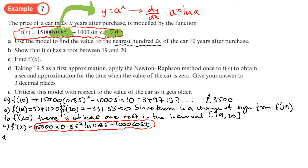Okay, part d. So part d is saying, taking 19.5 as a first approximation, apply the Newton-Raphson method once to obtain a second approximation. Right, so we know that x₀ is going to be 19.5. Newton-Raphson, which I'm pretty sure this is in the formula book, is our next approximation is going to be the previous approximation minus f of x, so that's just whatever our original function was: 15,000 times 0.85 to the power x minus a thousand sine x.